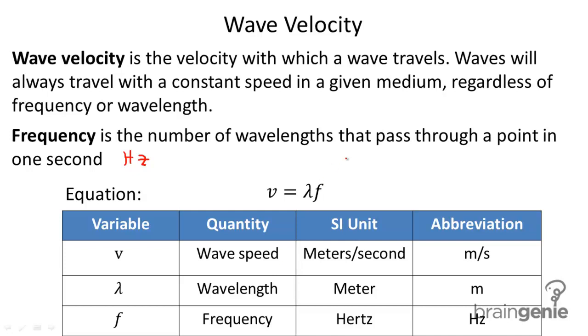So when I have these units written out, I have V equals meters times Hertz. And remember that Hertz is also equal to meters times second to the negative one. And that gives you meters per second.